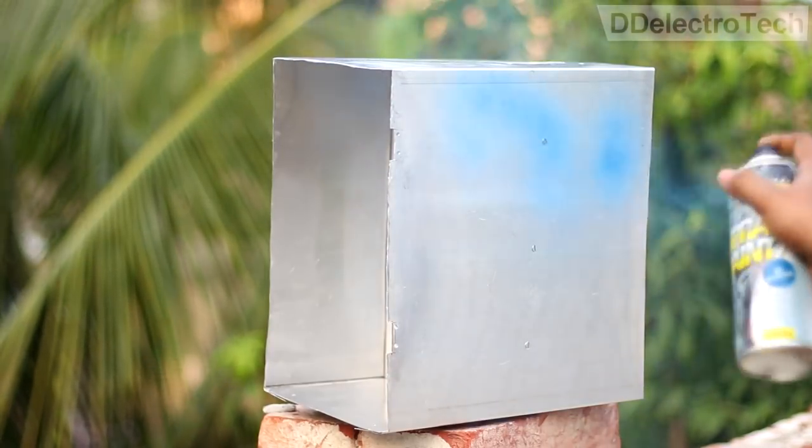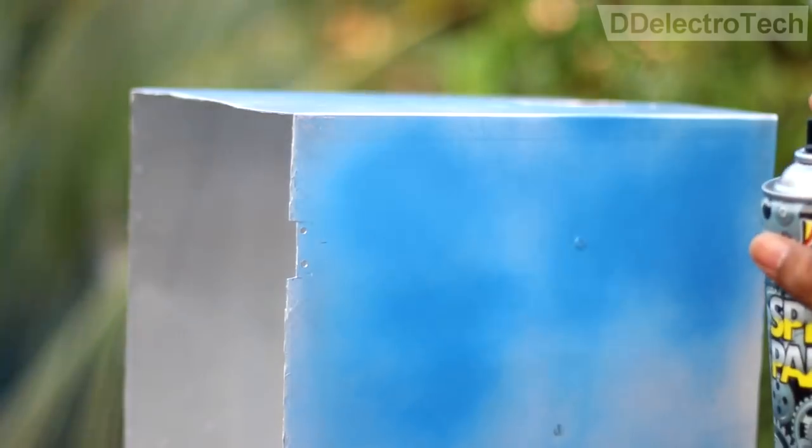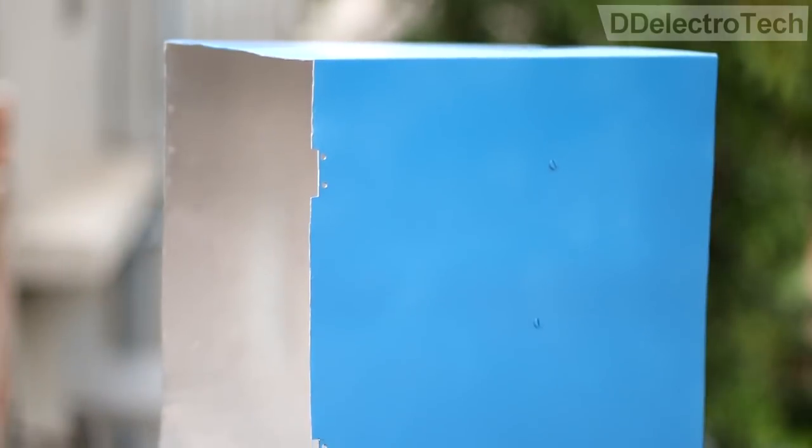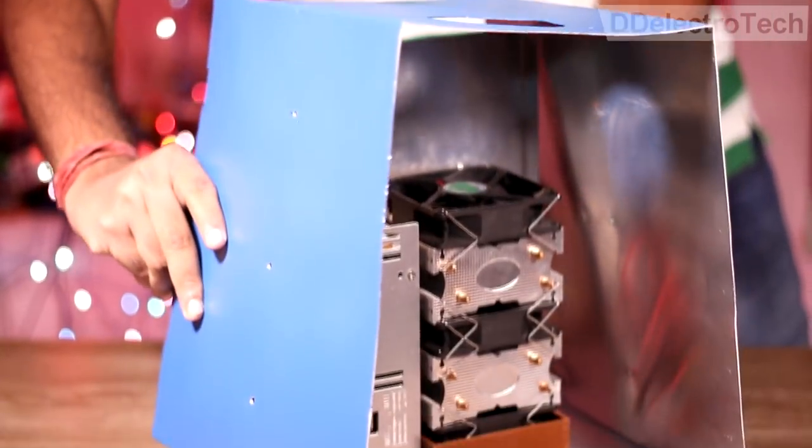Then I have spray painted the outer cabinet with blue color. Then I have covered the system with the cabinet.